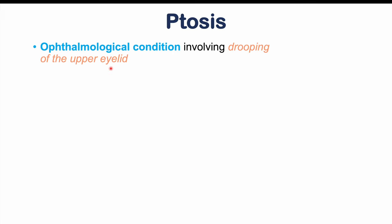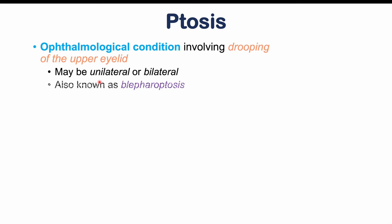Ptosis is an ophthalmological condition involving drooping of the upper eyelid. It may be unilateral or bilateral — one-sided or both-sided — and it's also known as blepharoptosis. The prefix 'blepharo' refers to the eyelid.